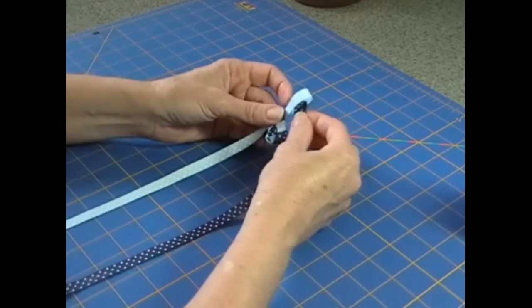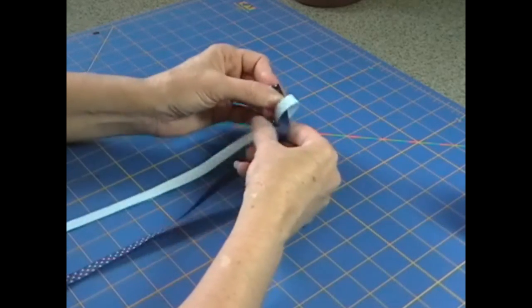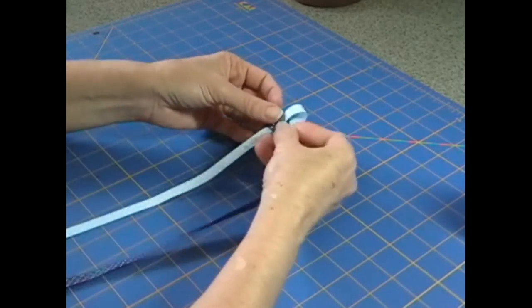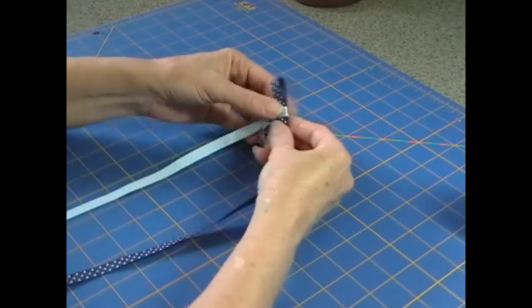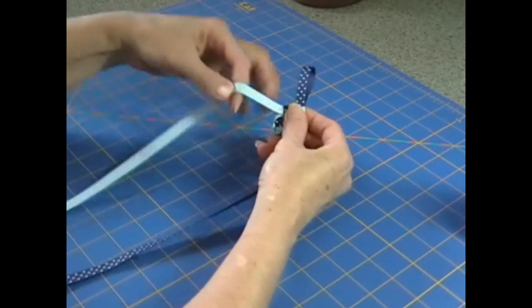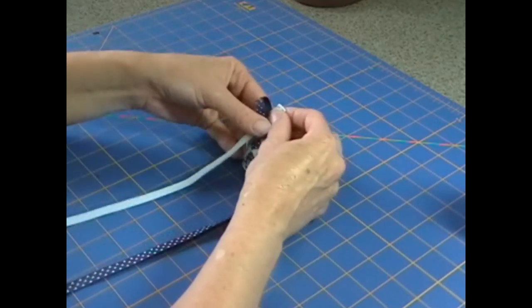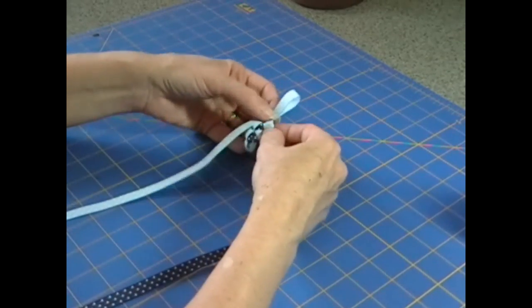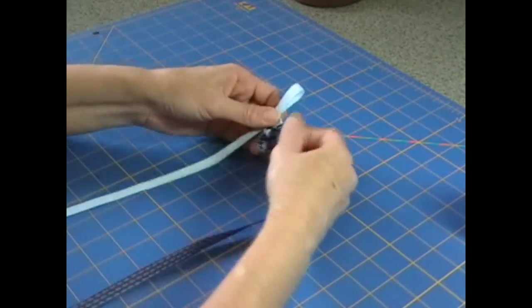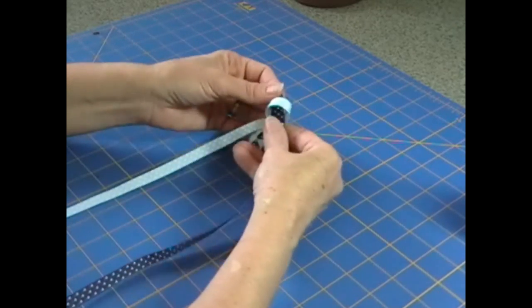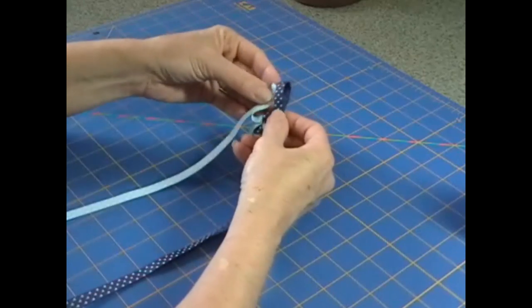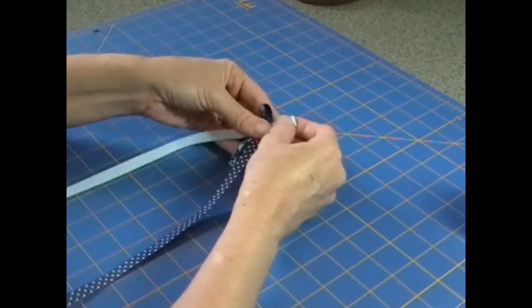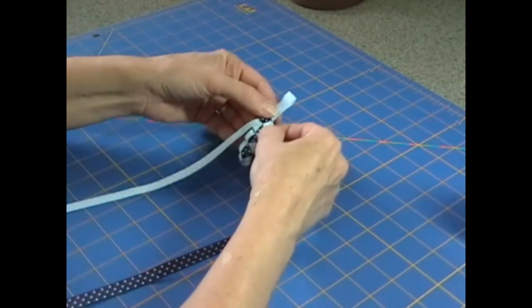Now make the loop with the dark blue and put it through the light blue. And pull the light blue end. And once you get going it actually goes really quickly. I'm just going to keep feeding loops back and forth through each other and pulling them tight.